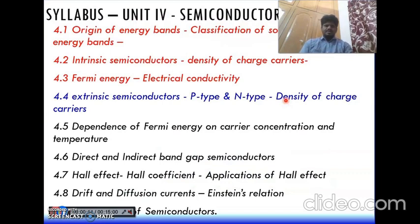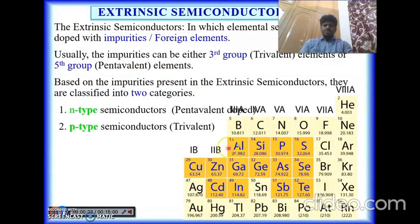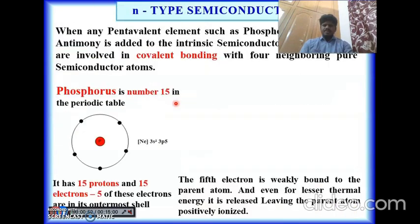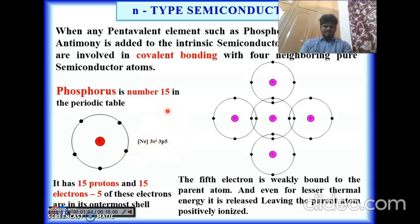For n-type semiconductor, consider the fifth group element phosphorus, which has five valence electrons. When we replace one silicon atom in the lattice with phosphorus, four of phosphorus's electrons participate in covalent bonds with four neighboring silicon atoms, and one electron is set free for conduction. This free electron is responsible for electrical conduction in n-type semiconductors. The number of free electrons equals the number of doping atoms — hence it is called n-type or negative-type semiconductor.